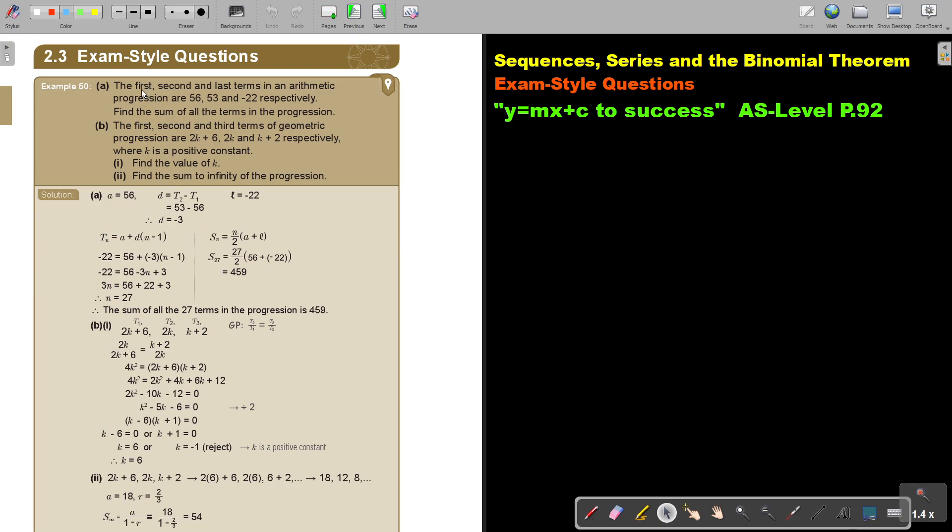Let's look at the example. The first, the second and the last terms in the arithmetic progression are 56, 53 and negative 22 respectively. So first term.